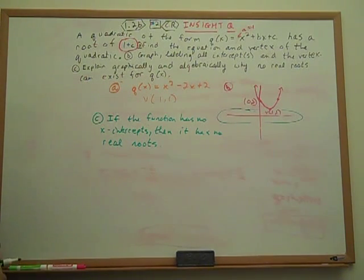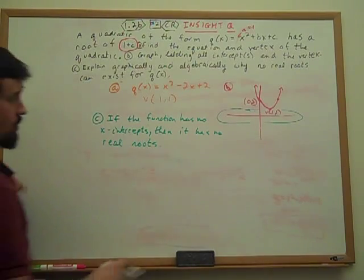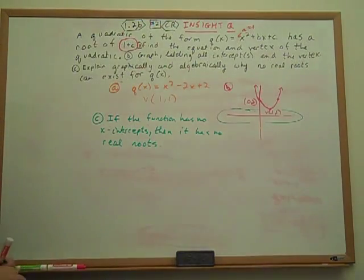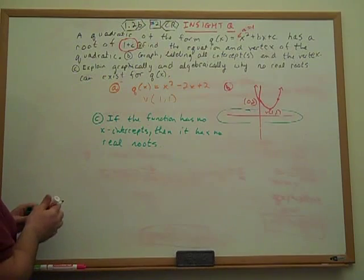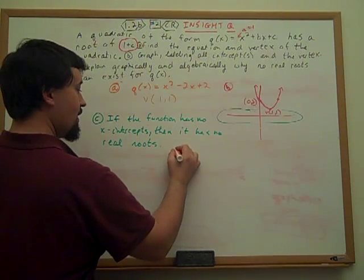Algebraically, remember that the nature of the roots, whether they're real or complex, depends on the discriminant. The discriminant is B squared minus 4ac.